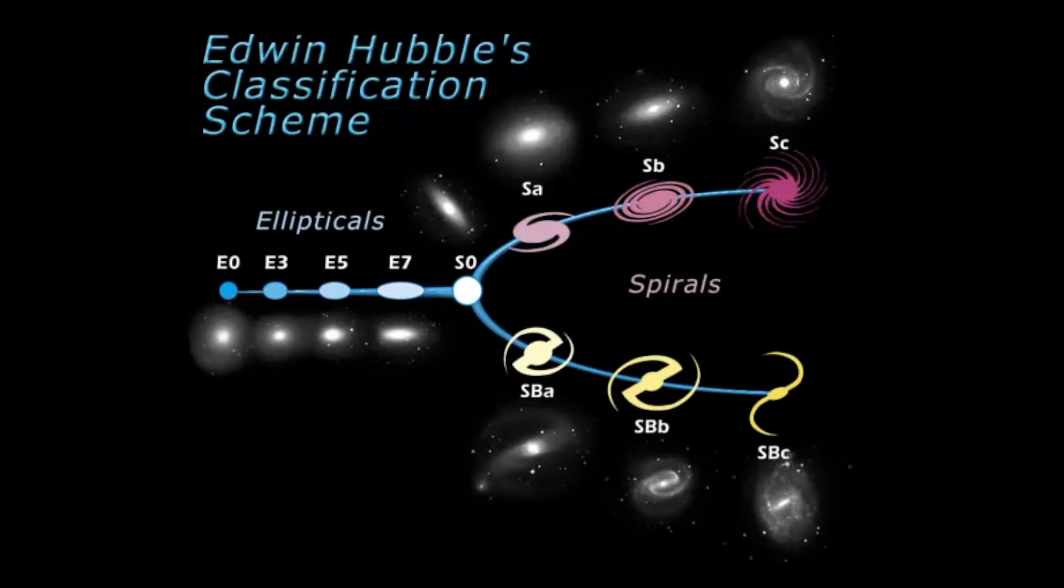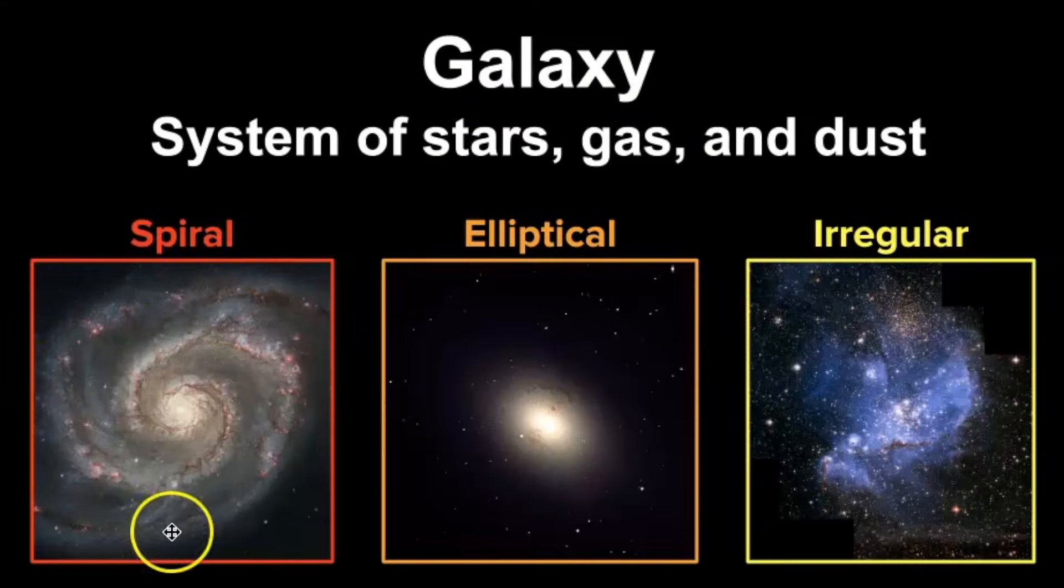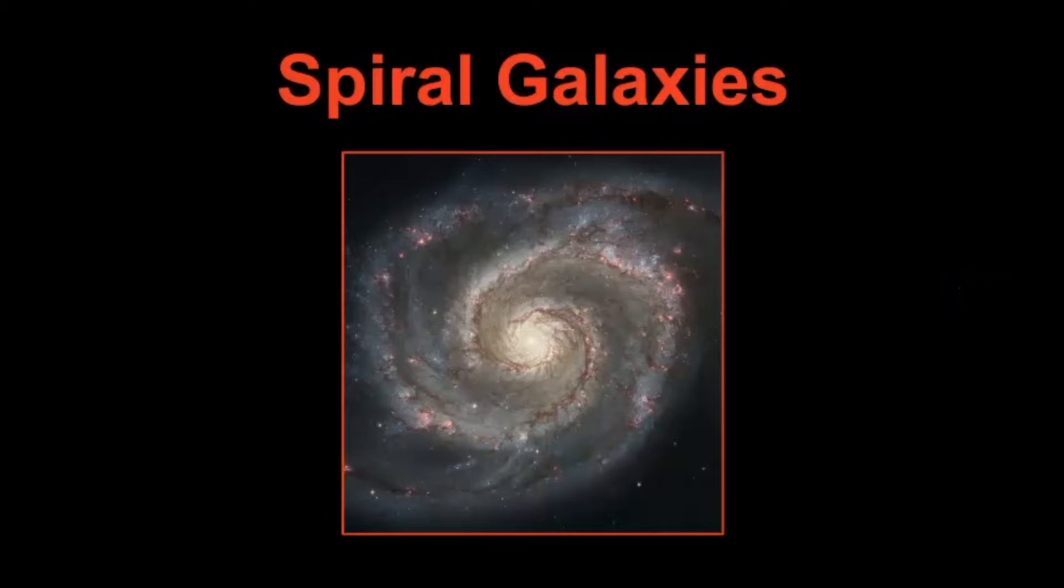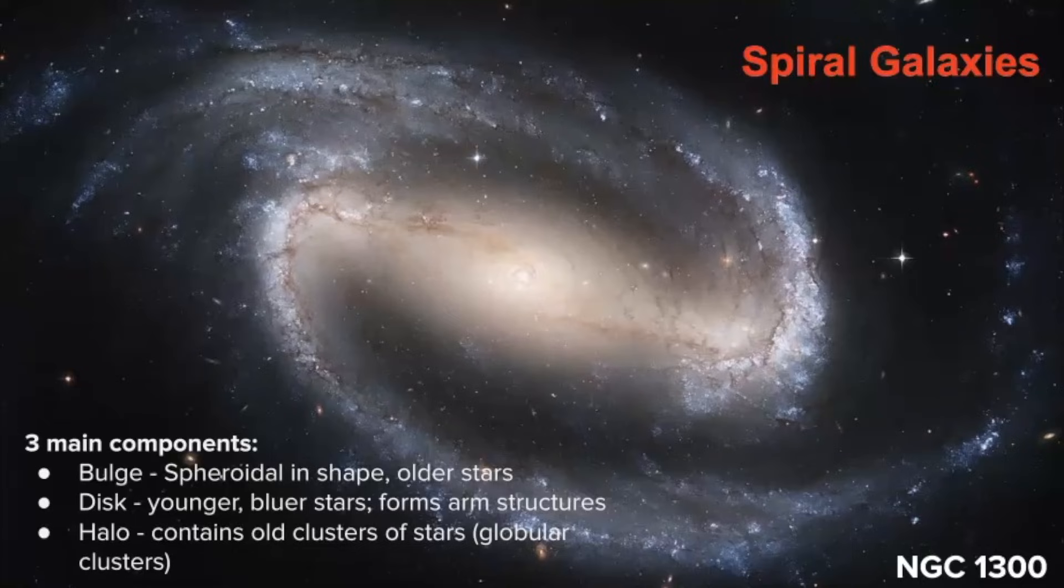So here we have a spiral shaped galaxy, an elliptical galaxy, and then I also included irregular since they are fairly common as well. Spiral galaxies, as you can probably guess from the name, they have a spiral pattern and visible component parts.